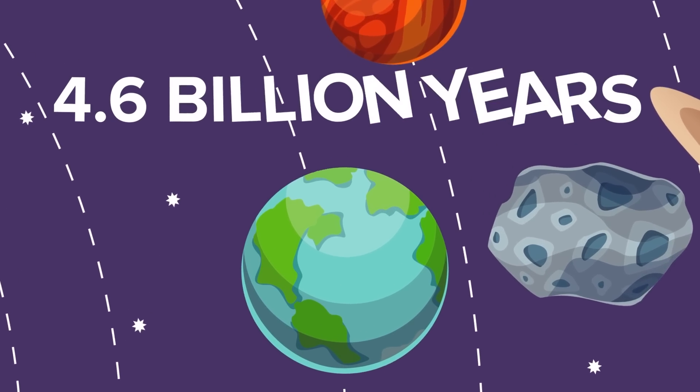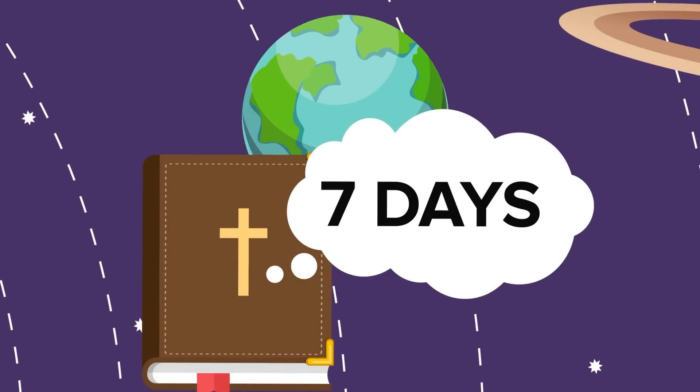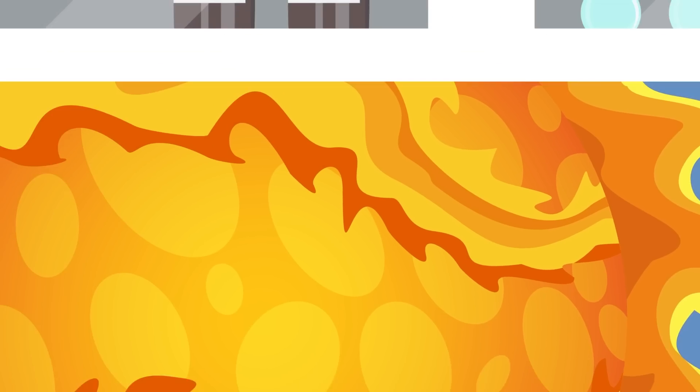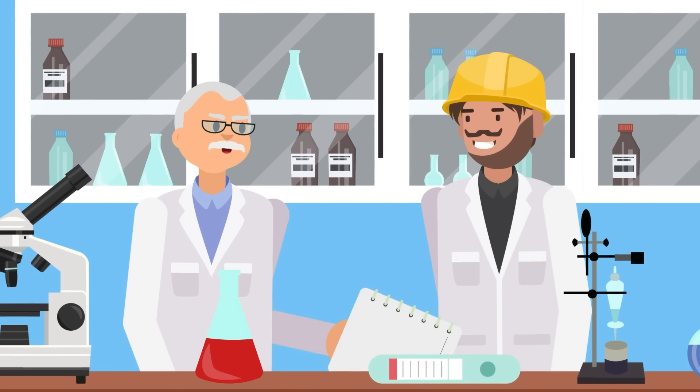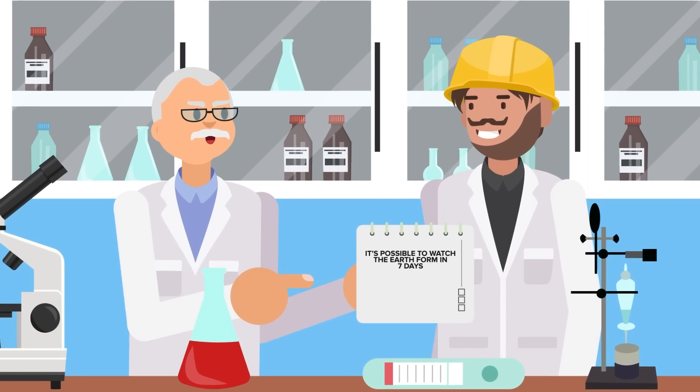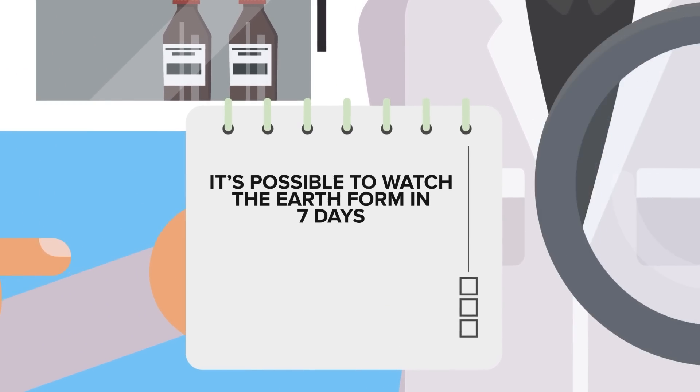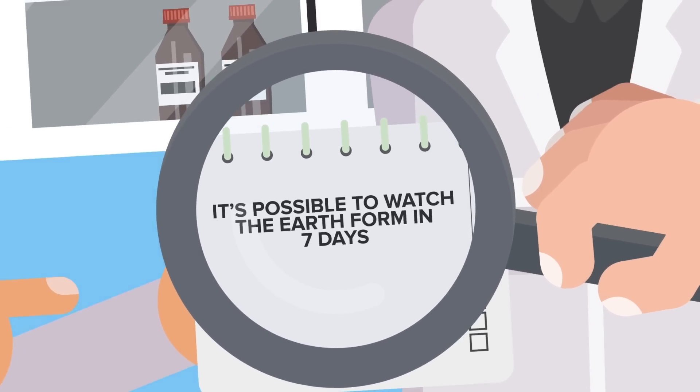Earth is about 4.6 billion years old, so could it have been created in seven days like in the book of Genesis? It might sound crazy, but it actually could have been possible for someone to watch the earth form in seven days. For this adventure, we'll use science to show exactly how this could have happened.